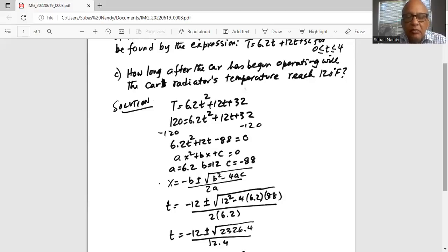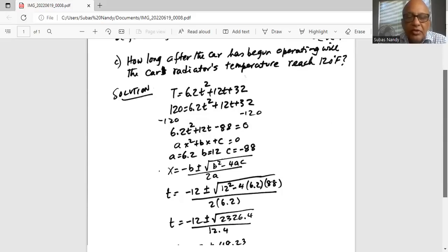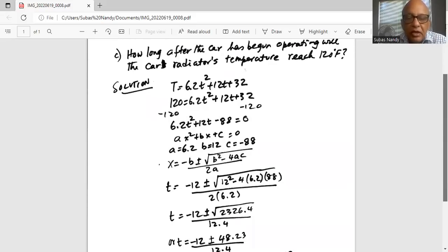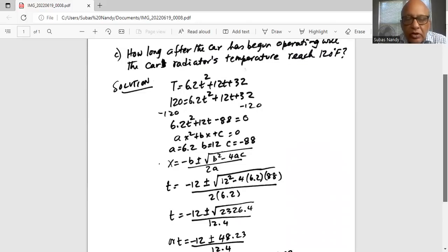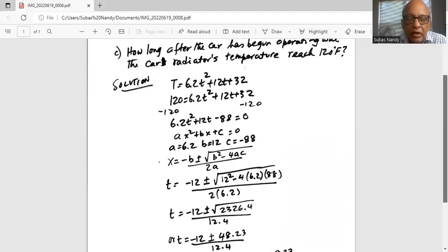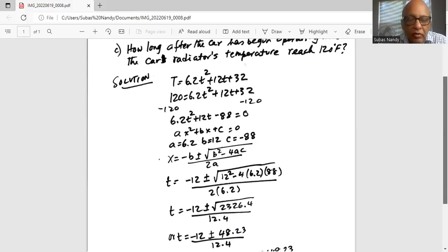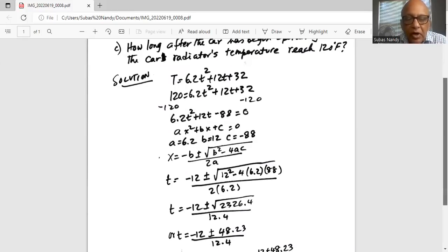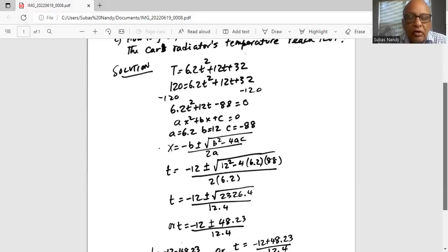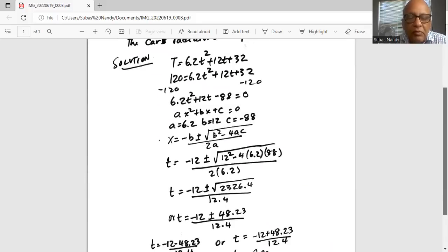Which is x = (-b ± √(b² - 4ac)) / 2a. So it becomes t = (-12 ± √(12² - 4(6.2)(88))) / (2(6.2)). So we have t = (-12 ± √2326.4). Inside the square root, it is 2326.4. We take the square root of 2326.4 to get 48.23.